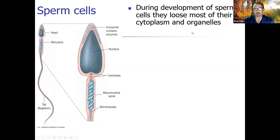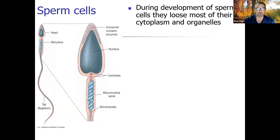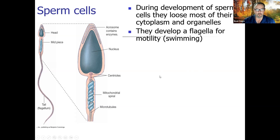During development, sperm cells lose most of their cytoplasm and organelles — they need to be light because they're swimming, and the fastest swimmer usually becomes the fertilizing sperm. There was selective pressure over millennia to make the Y chromosome smaller because sperm with slightly smaller Y chromosomes got there first. The sperm develops a flagella for motility, swimming upstream through the oviduct toward the ovum being released from the ovary.